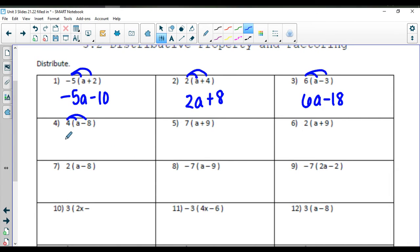Four times a, and four times a negative eight, it's going to give me four a minus thirty-two. Seven a plus sixty-three. Two a plus eighteen.